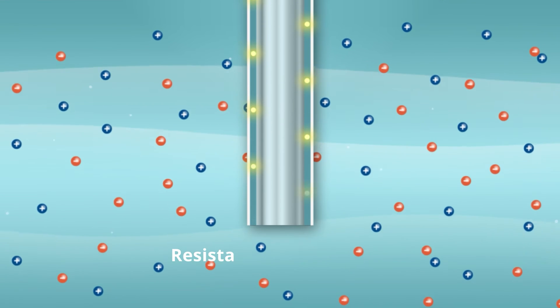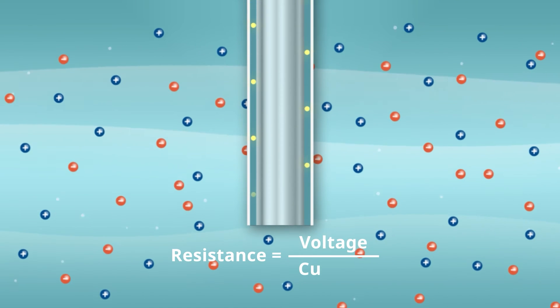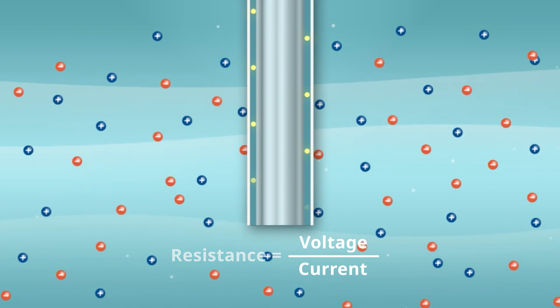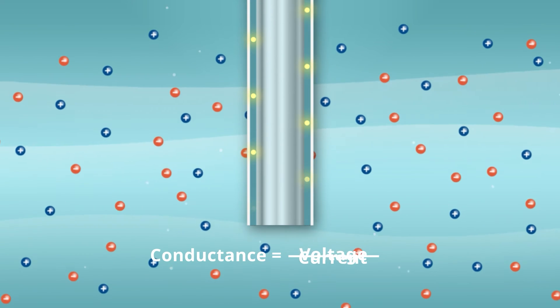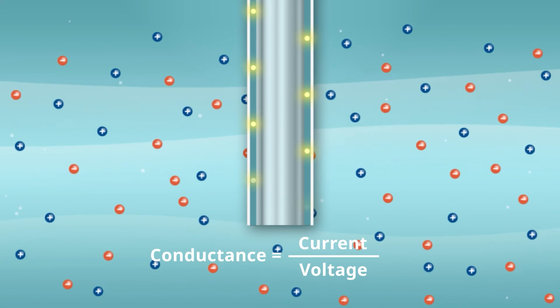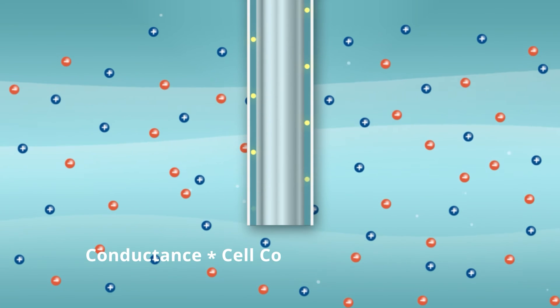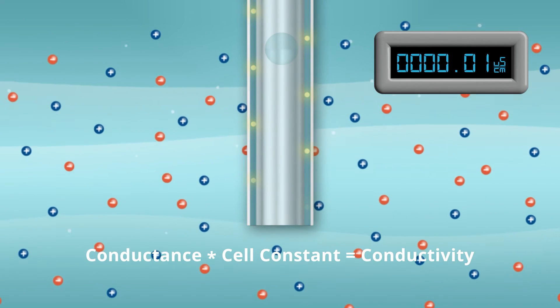The resistance is calculated by dividing the voltage by the current using Ohm's law. Conductance is then calculated by taking the reciprocal of the resistance. The product of the conductance and cell constant is the conductivity.